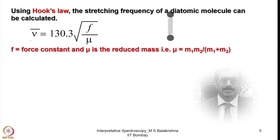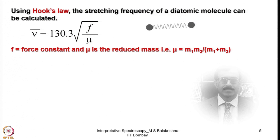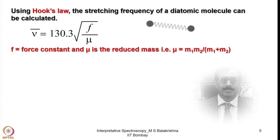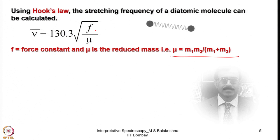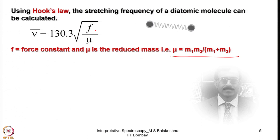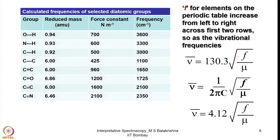In my previous lectures, I was telling about how the stretching frequency of a diatomic molecule or of a bond can be related to its reduced mass and also the stretching force constant. The simplest equation one can think of is: nu bar equals 130.3 into square root of f over mu. In some equations, k is also used as an abbreviation for stretching force constant. Here f is the stretching force constant, mu is the reduced mass, given in atomic mass units, and force constant is given in newtons per meter with frequency in centimeter minus 1.